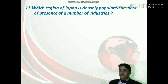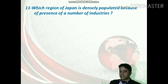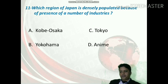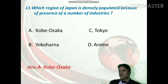In which region of Japan is densely populated because of the presence of a number of industries? The options are Kobe–Osaka, Tokyo, Yokohama, or option D. The correct answer is Kobe–Osaka — option A is correct. It is a very dense industrial region.